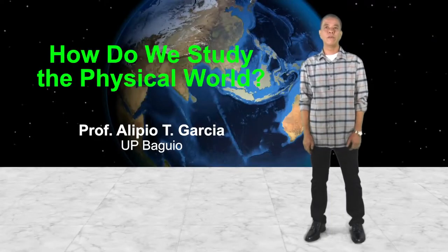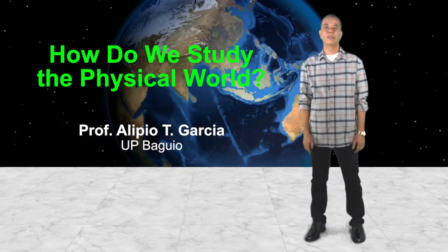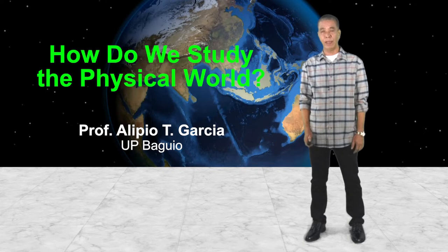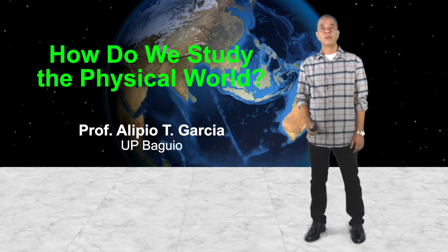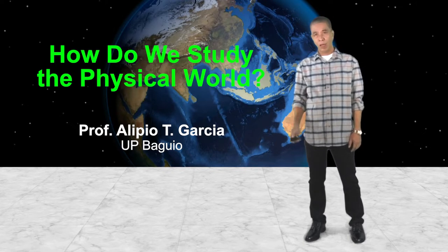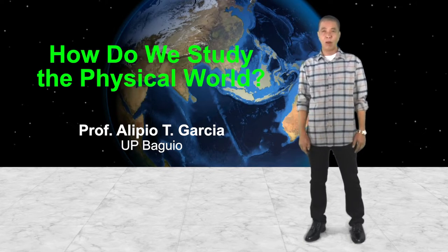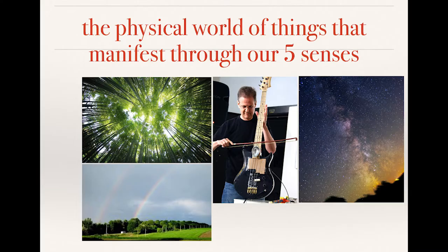But first, we are going to define in today's context what we mean by physical world. Physical world consists of the things that manifest through our five senses, like, for instance, trees.